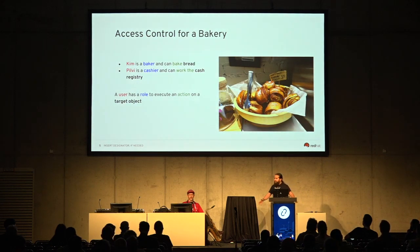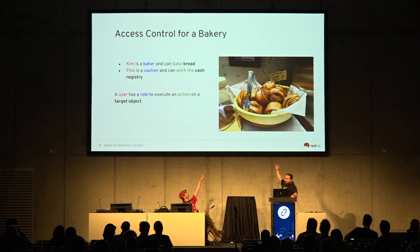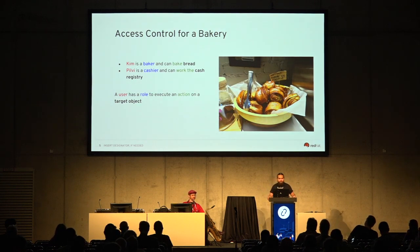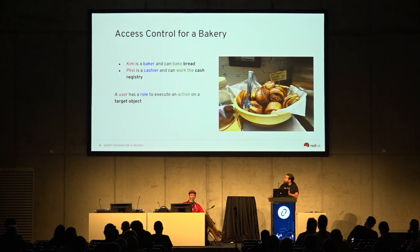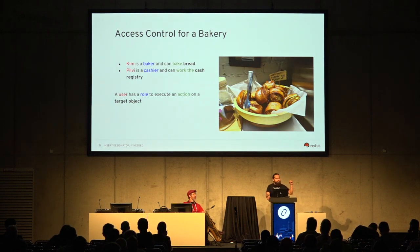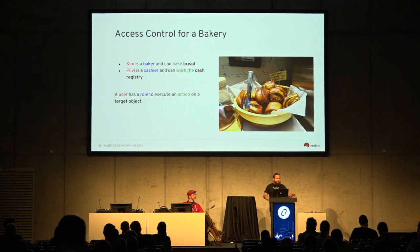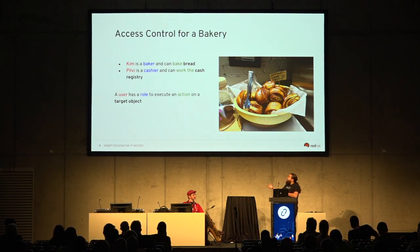Let's take a very simple example — just a bakery. I live in Finland, so it's all Finnish names, Finnish pastries. Let's say Kim is a baker. He can bake bread, and he has his baker certification. He can manage food. Pilvi is a cashier, and she manages money and deals with customers. Given that Kim is a baker, he's not allowed to deal with customers or money, and given that Pilvi is not a professional baker, she's not allowed to bake. So this is access control in a nutshell — a user has a role and can execute an action on a target object.